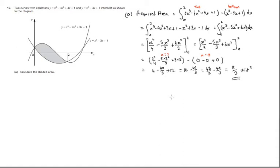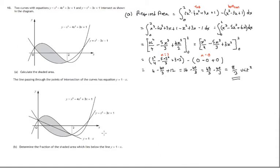Now let's look at part B. We've got the same diagram, but this time we have a straight line with equation Y equals 1 minus X which divides that area we found, 8 thirds units squared, into 2. We're to determine the fraction of the shaded area which lies below the line Y equals 1 minus X.